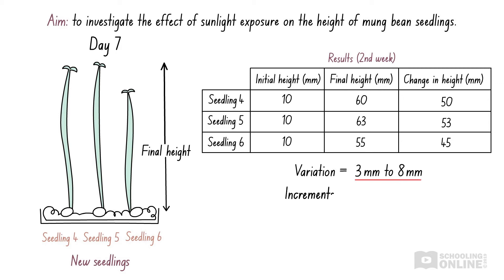These differences are much larger than the increments of the wooden ruler, so these results have been affected by large random errors. Therefore, the results collected in the second week are not reliable. Perhaps we should repeat the experiment again and collect new, more reliable measurements.